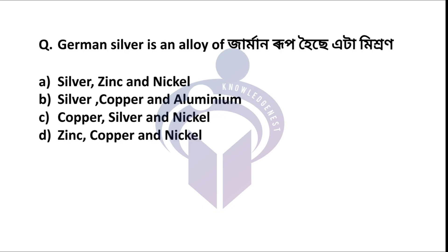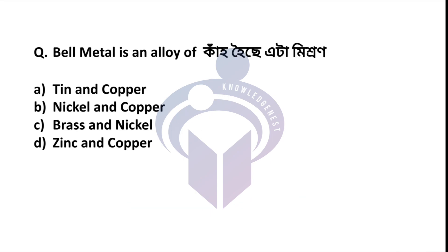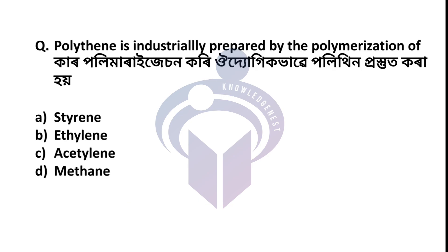Next question: German silver is an alloy of which elements? The correct answer is option D: zinc, copper, and nickel. Next question: Bell metal is an alloy of which elements? The answer is option A: tin and copper.